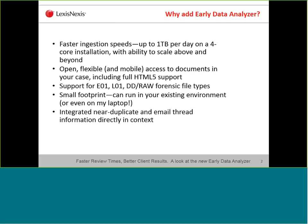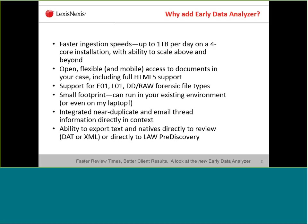We also have integrated near-dupe and email thread information directly in context, available within Early Data Analyzer and Early Data Analyzer web. You also have the ability to export text and native directly to review, whether that's via a concordance DAT file or XML file, or you can directly export to Law PreDiscovery. And for those of you that love automation, we also have the open API with Early Data Analyzer, allowing you to develop around it.